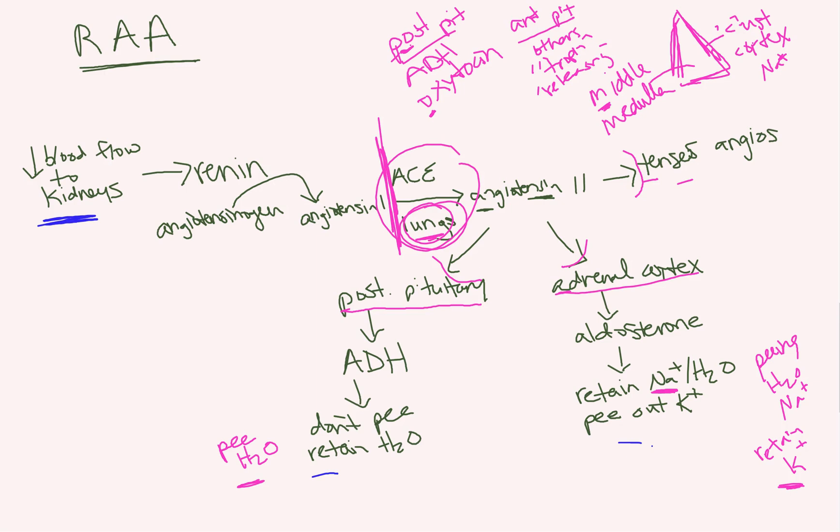So people with congestive heart failure, we give them ACEs and ARBs to lyse this pathway so that their kidneys sort of have this communication disconnect with their heart and their heart is able to pump better because their kidneys are not retaining water, thinking they're helping.